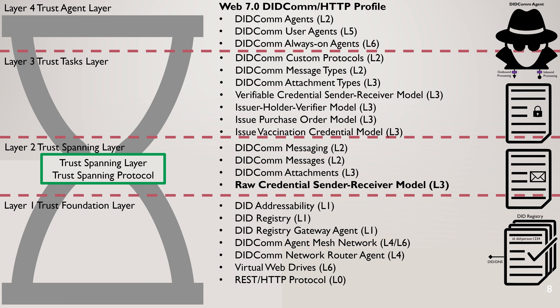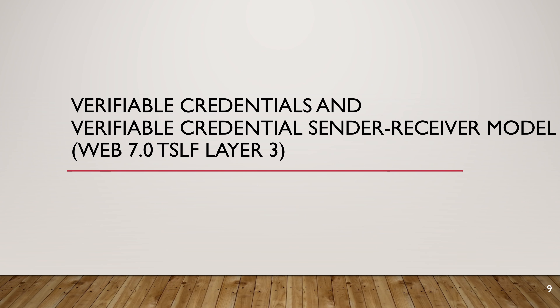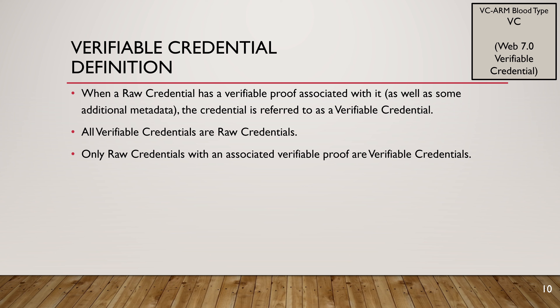Linking back to the previous presentation: the raw credential sender-receiver model fits in level two of the trust spanning layer framework. A verifiable credential is a raw credential that has a verifiable proof associated with it, probably with some additional metadata. All verifiable credentials are raw credentials, but only raw credentials with an associated proof are considered verifiable credentials.